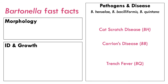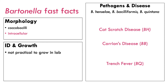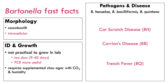Moving to Bartonella. The pathogens in this group include Henselae, Bacilliformis, and Quintana. From a morphology standpoint, they are coccobacilli and also intracellular pathogens. It's not really practical to grow these in the lab — they take 9 to 40 days — which is why we tend to use PCR to identify them more readily. If you try to grow them, they require supplemented chocolate agar with extra CO2 — around 5 to 10 percent — and a little humidity. Very fussy.